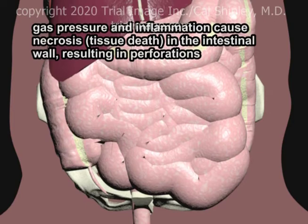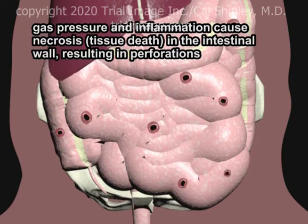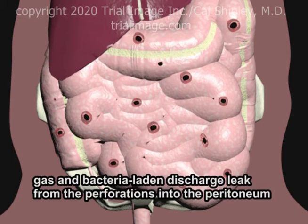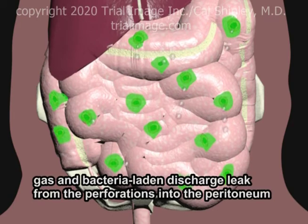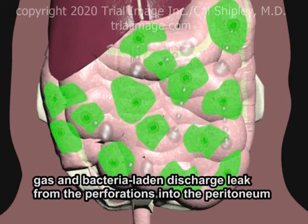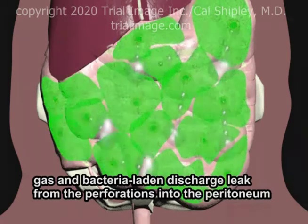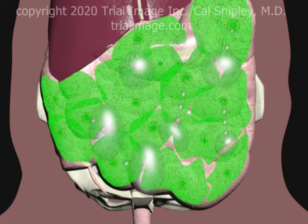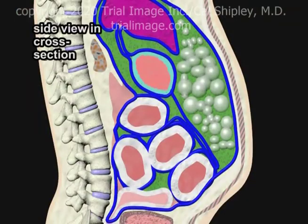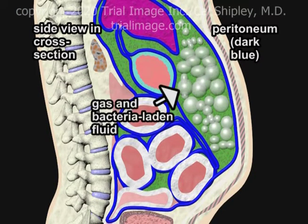Gas-related pressure combined with inflammation result in tissue necrosis and perforation of the intestinal wall. Gas and bacteria-laden discharge leak through the perforations and into the peritoneal cavity. This view of the abdomen, seen from the right side in cross-section, demonstrates the presence of gas and bacteria-laden fluid within the peritoneum.